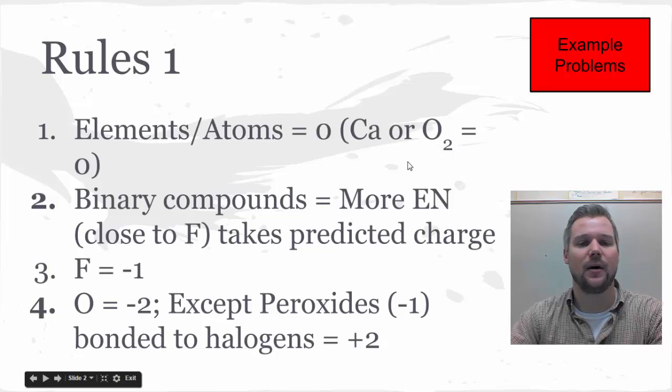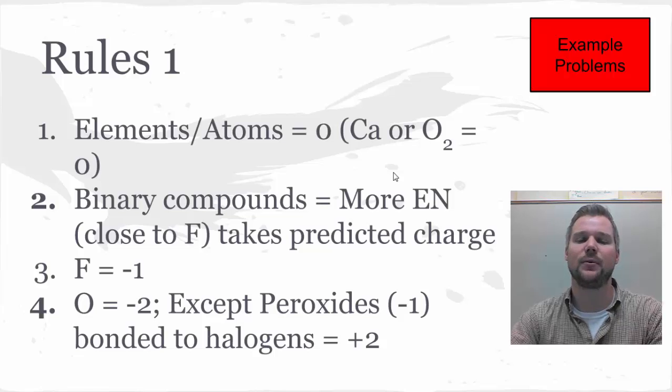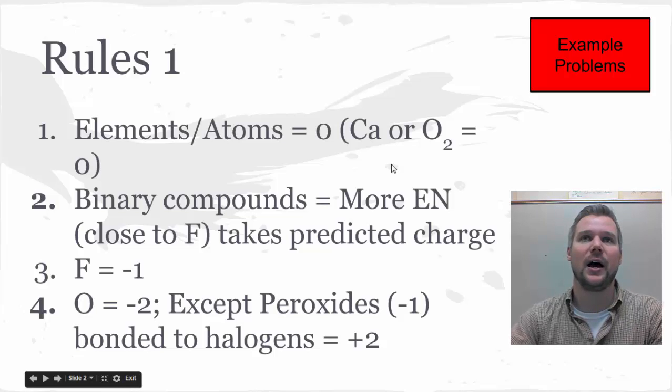Binary or two-atom compounds—we're talking about molecular compounds here—the more electronegative of the two atoms, the one that's closer to fluorine, would take the predicted charge. So for example, if I had oxygen and chlorine... well, that's not a great example.